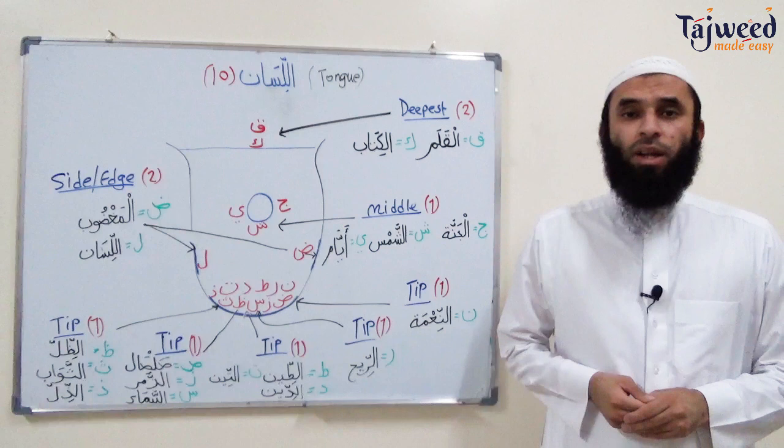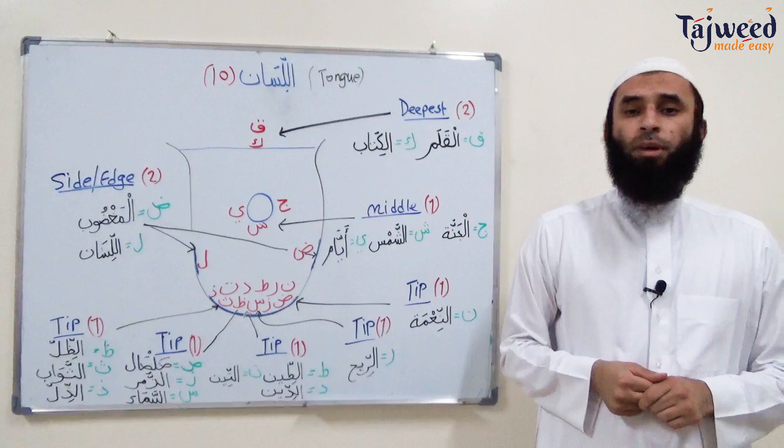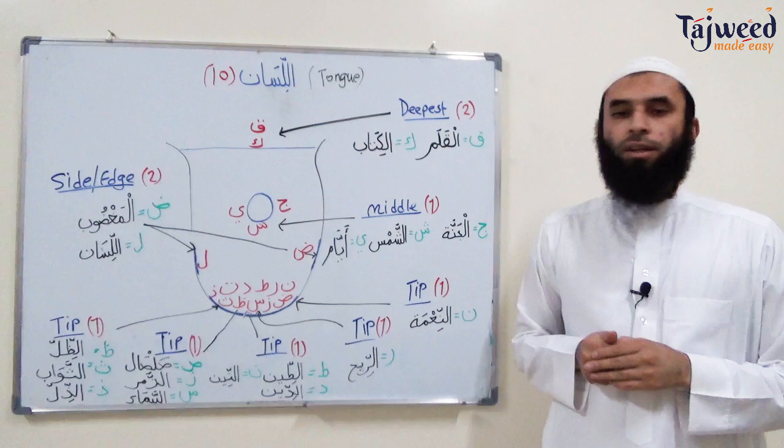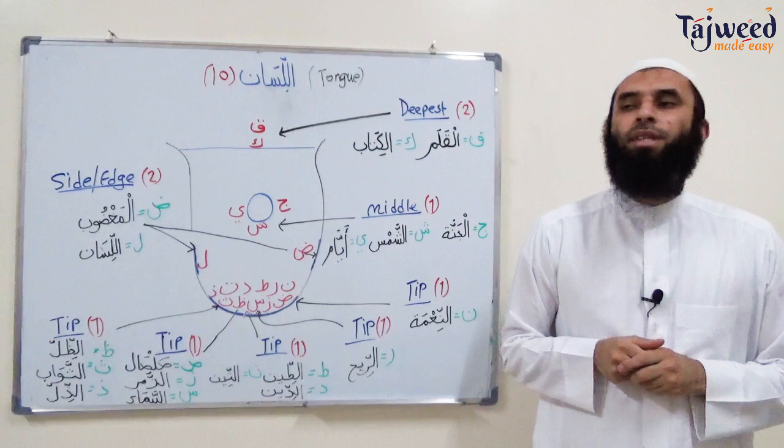Welcome back to Read Made Easy, this is your brother Abu Muhammad. Today we're going to do the last and fifth area of Makharij al-Huroof, which is al-Lisan. We're going to find out how many makhraj points there are, which letters are pronounced with the tongue, how to pronounce these letters clearly and correctly, and lastly the mistakes people make when pronouncing these letters so we can avoid them.